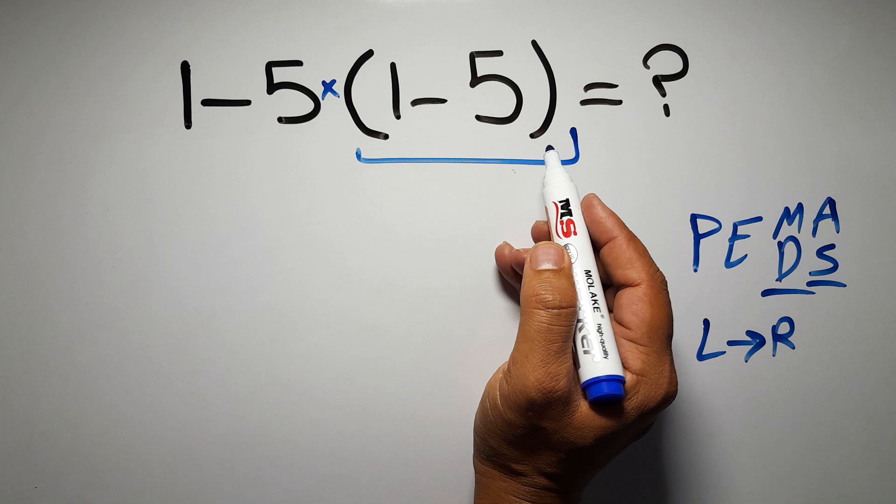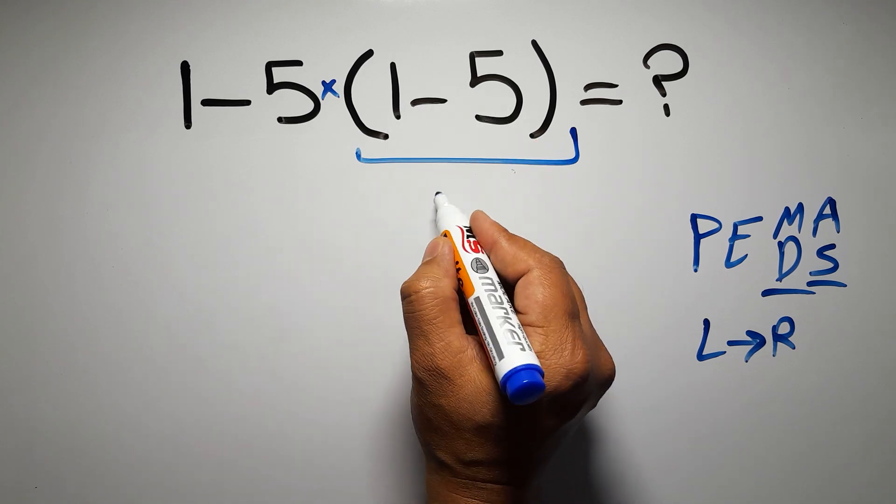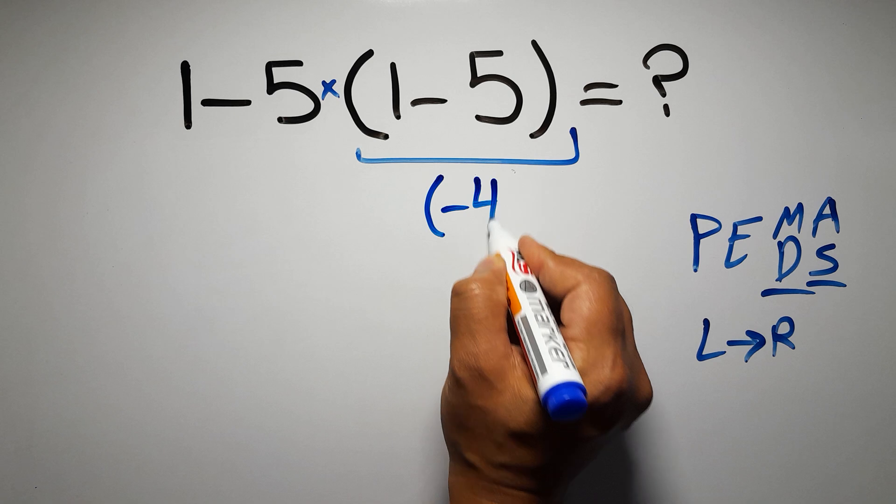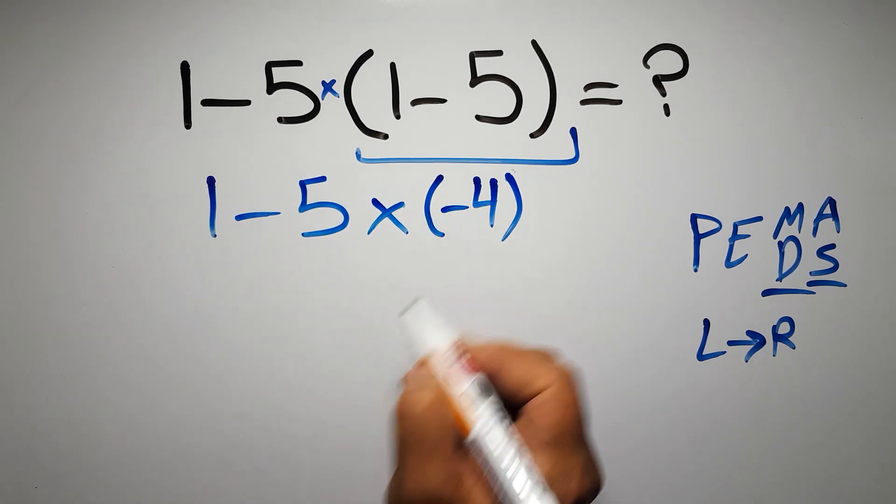So first these parentheses. Inside these parentheses, we have 1 minus 5, which gives us negative 4. So we have 1 minus 5 times negative 4.